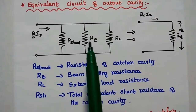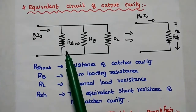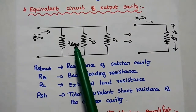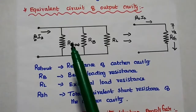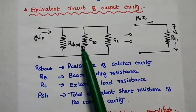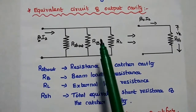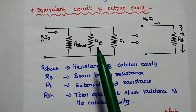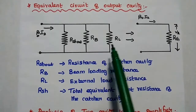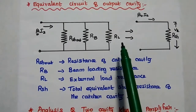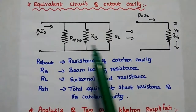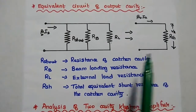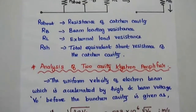The electrons with reduced velocity are collected by the collector, which is at a highly positive potential. Next is the equivalent circuit of the output cavity, which has three resistances in parallel: R_SHO, the shunt resistance of the catcher cavity; beam loading resistance, representing the electron beam loading; and R_EL, the external load resistance. All these resistances can be combined together as R_HS, the total equivalent shunt resistance of the output cavity.